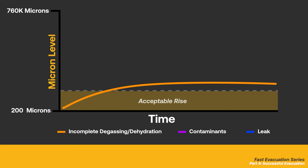Now, if the rise trend is similar but equalizes considerably higher, this indicates that there may be contaminants or moisture in the system, which may require a nitrogen sweep and a second evacuation.